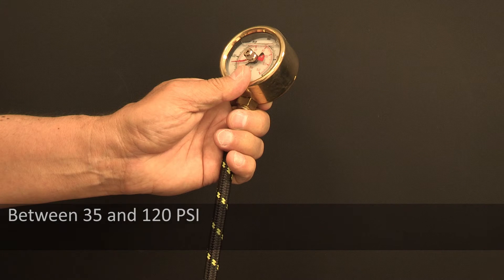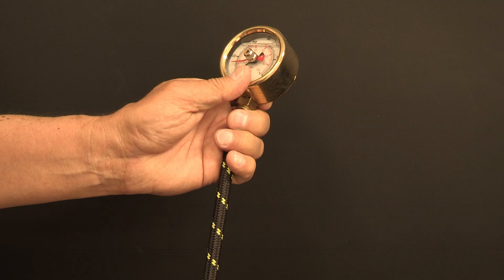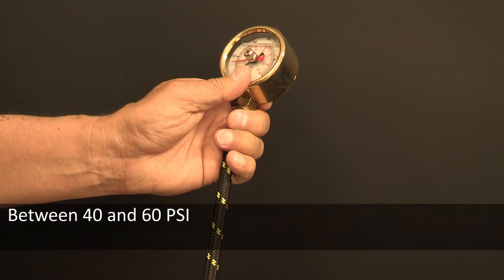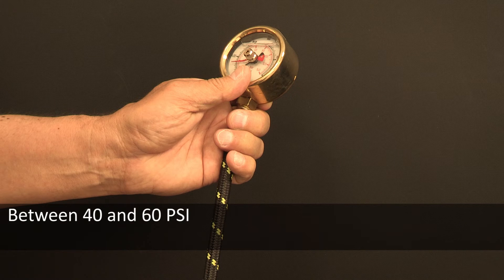If you have a reverse osmosis water filtration system, these requirements don't change. However, the water pressure to reverse osmosis systems needs to be a minimum of 40 to 60 psi.